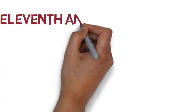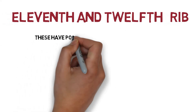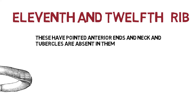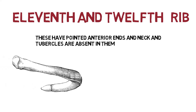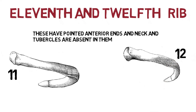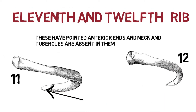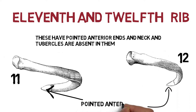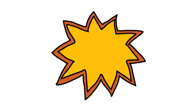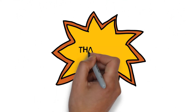The 11th and 12th ribs have pointed anterior ends, and the neck and tubercles are absent in them. Here are the 11th and 12th ribs — as you can see, they have pointed anterior ends and no tubercles or neck.